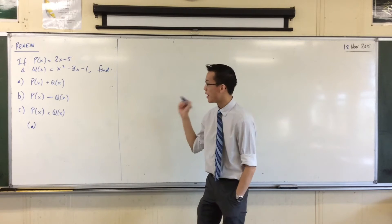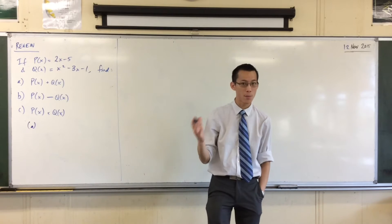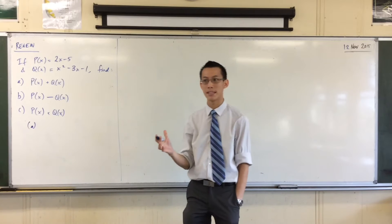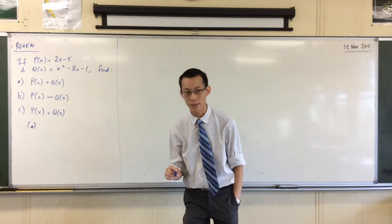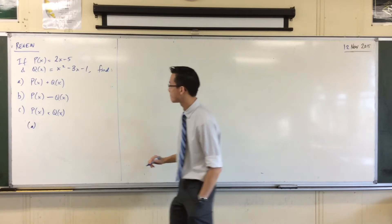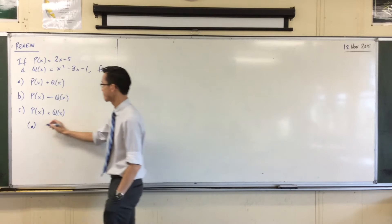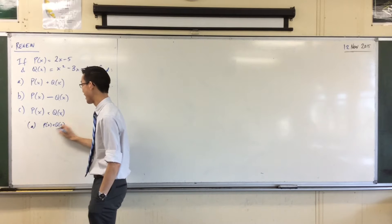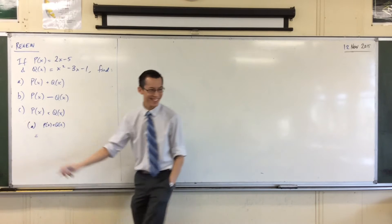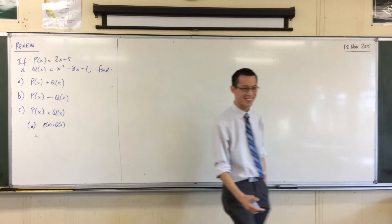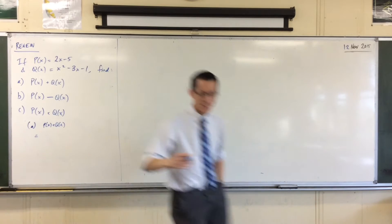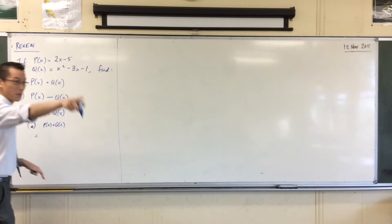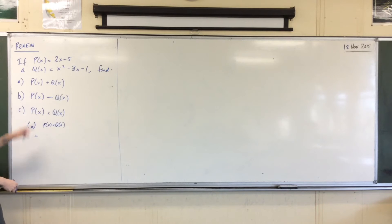Someone go to an answer for the first one — when we add these two together, what do we get? Any takers? X squared minus 5X minus 6. We'll start, and we'll go to you for the next one.